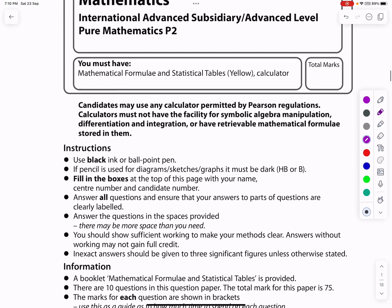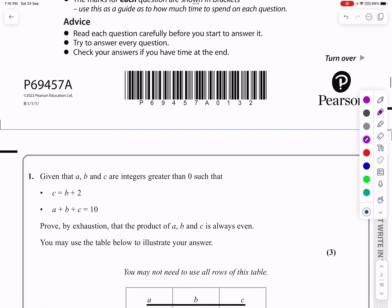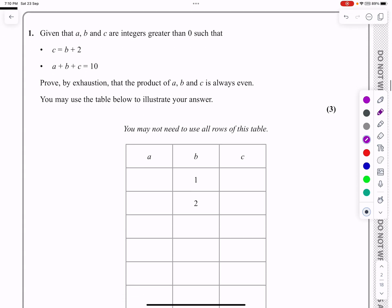Okay, this is the P2 paper from October 2022. This is question number one, which is an algebraic methods question. It's a methods of proof question, and in particular, it's a proof by exhaustion question.